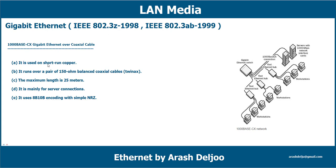To review 1000Base-CX: it is used on short-run copper, runs over a pair of 150-ohm balanced coaxial cable, has a maximum length of 25 meters, is mainly for server connections, and uses 8B/10B encoding with simple NRZ. Note that this standard is rarely used in networks.